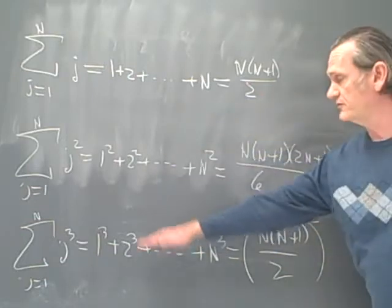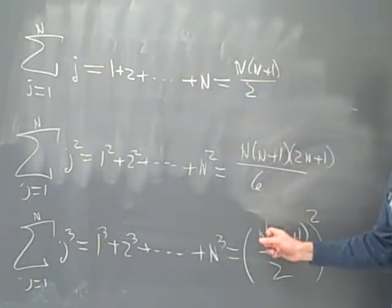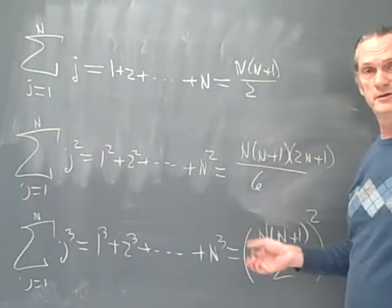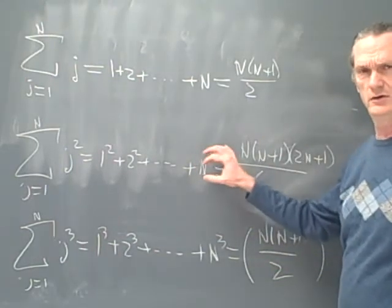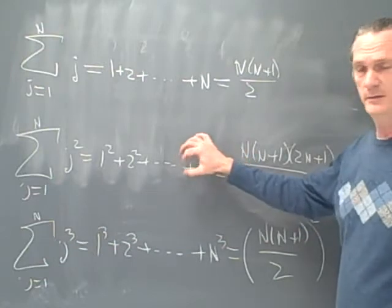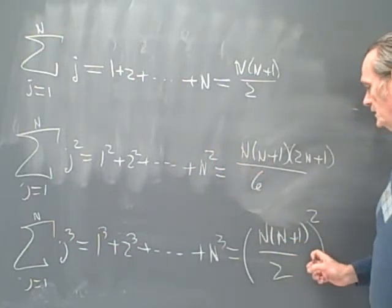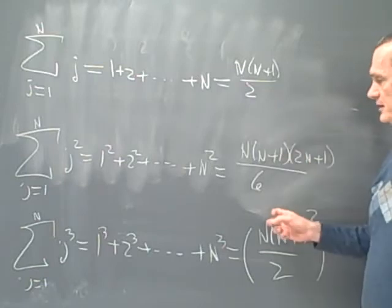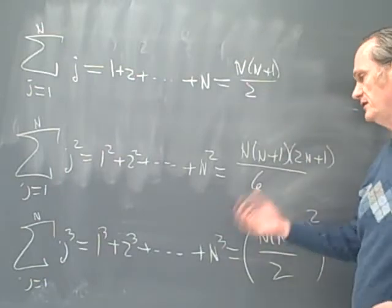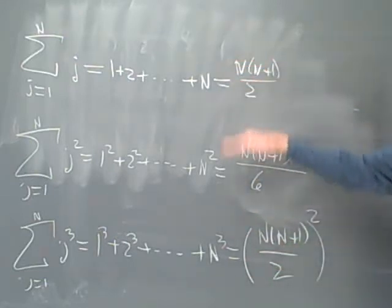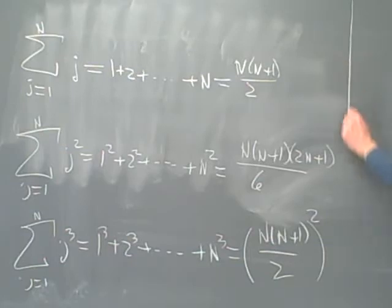There are formulas for the sums of j to higher powers — they involve the Bernoulli numbers, which we'll probably cover in another video in the future. Meanwhile, these are the fundamental formulas that we're going to prove today.